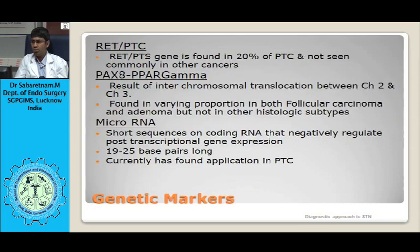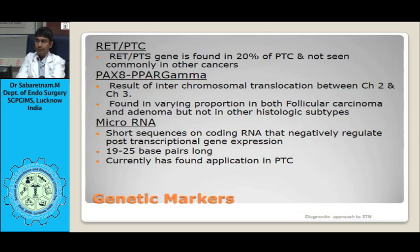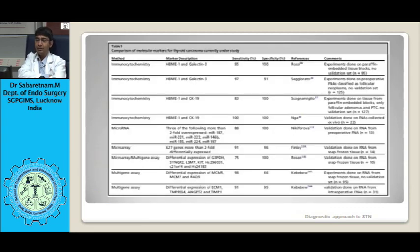A study on PET-detected incidental thyroid nodules — also known as PITNs (PET incidental thyroid nodules) — confirms a high chance of malignancy. These nodules must always be characterized with ultrasound followed by FNAC. Molecular markers such as Galectins, HBME-1, and BRAF are used as adjuncts in FNAC and can help evaluate thyroid nodules.